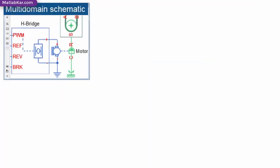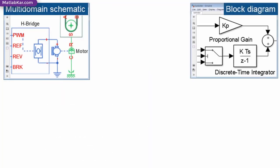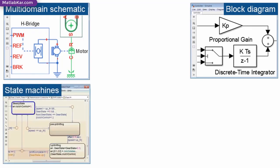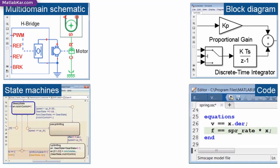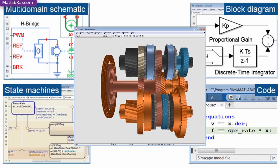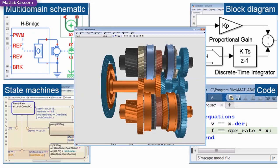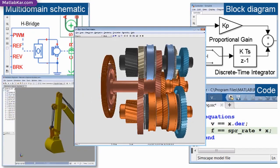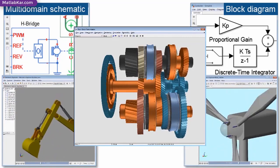SimScape Electronics models integrate directly with block diagrams in Simulink, state machines in StateFlow, and MATLAB functions. You can simulate your entire system in a single environment. This accelerates tasks such as designing control systems and optimizing system-level performance.